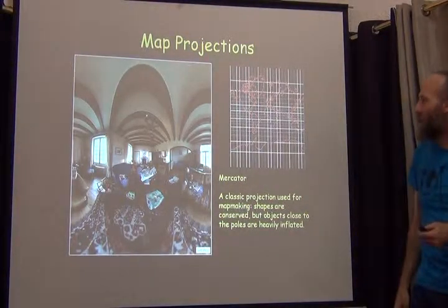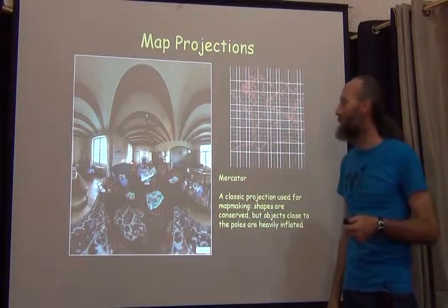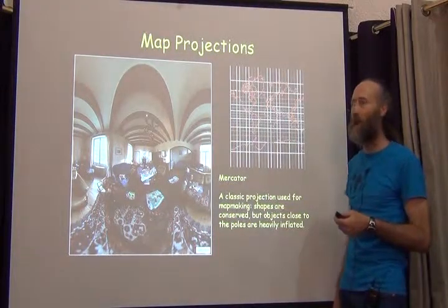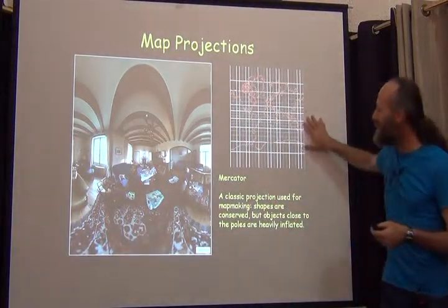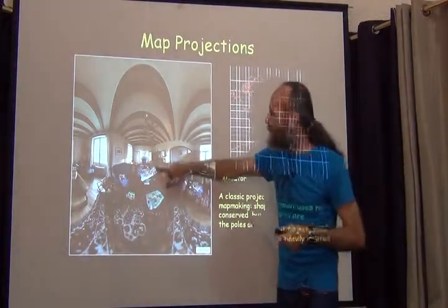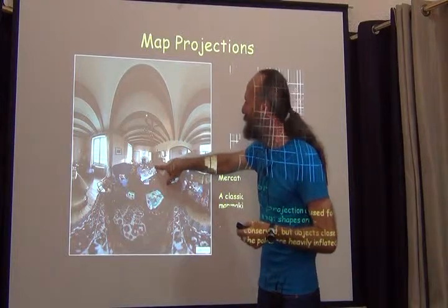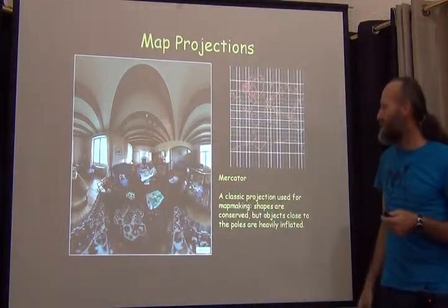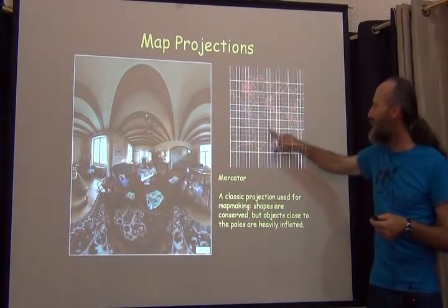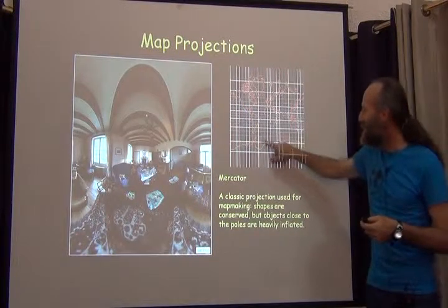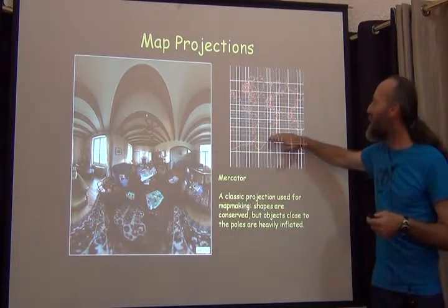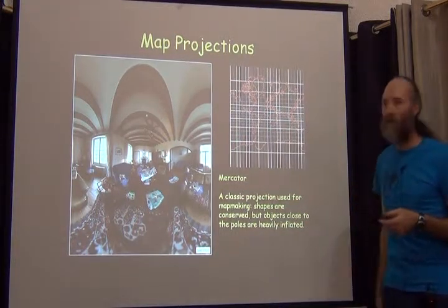Here's another example — the most commonly seen projection in the world, because this is what Google Maps uses and all other online mapping systems. This is what a Mercator projection looks like for the Earth, and that's what it looks like for the room — it gets quite distorted around the edges. The shapes are conserved; you can see Africa looks like Africa. But the closer you get to the poles, the more distorted it gets.